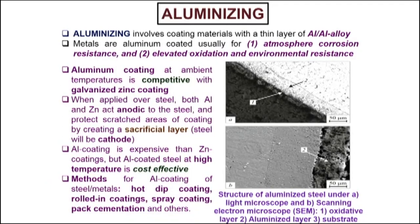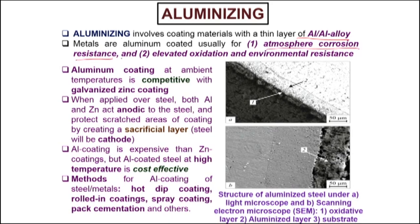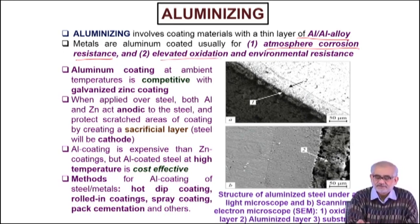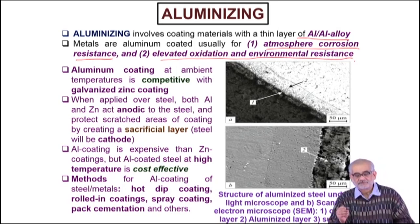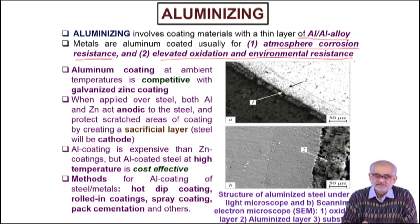Aluminizing, as the name suggests, actually involves a material which creates a thin aluminium-rich or aluminium-alloy-rich layer. This coating serves a twofold purpose: one is atmospheric corrosion resistance — not necessarily at high temperature, including at room temperature — and also elevated oxidation and environmental resistance against high temperature oxidation and environmental degradation.